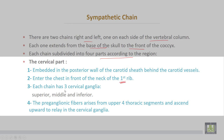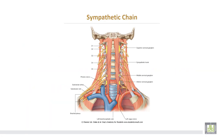The sympathetic chain has three cervical ganglia: superior, middle, and inferior. The preganglionic fibers arise from four thoracic segments and ascend upward to relay in the cervical ganglia. The diagram shows the sympathetic chain with three ganglia — the superior being the largest, then the middle, and the inferior.